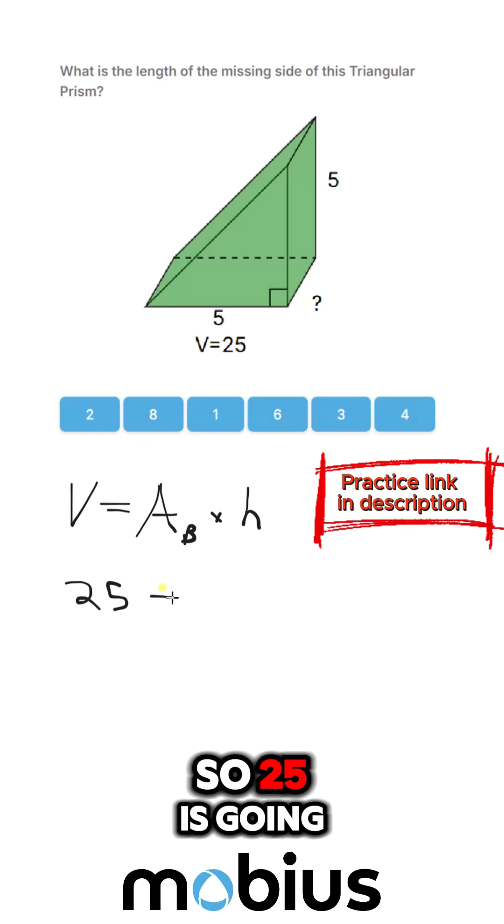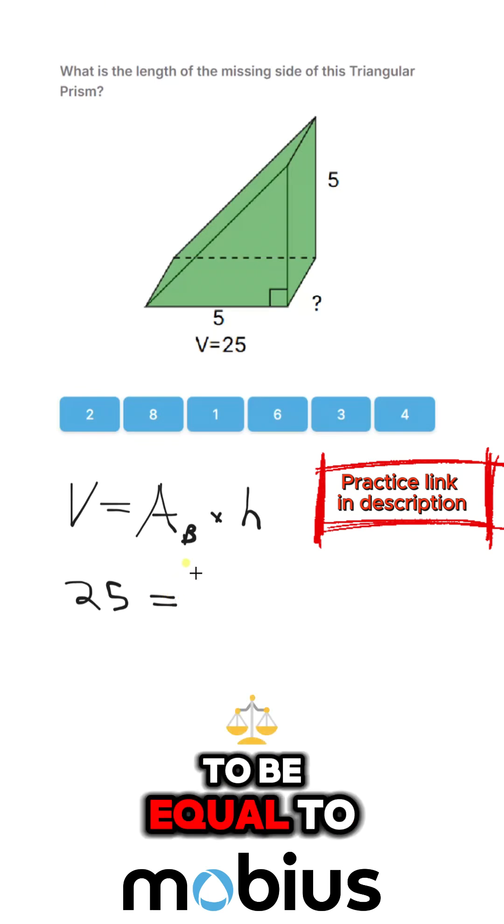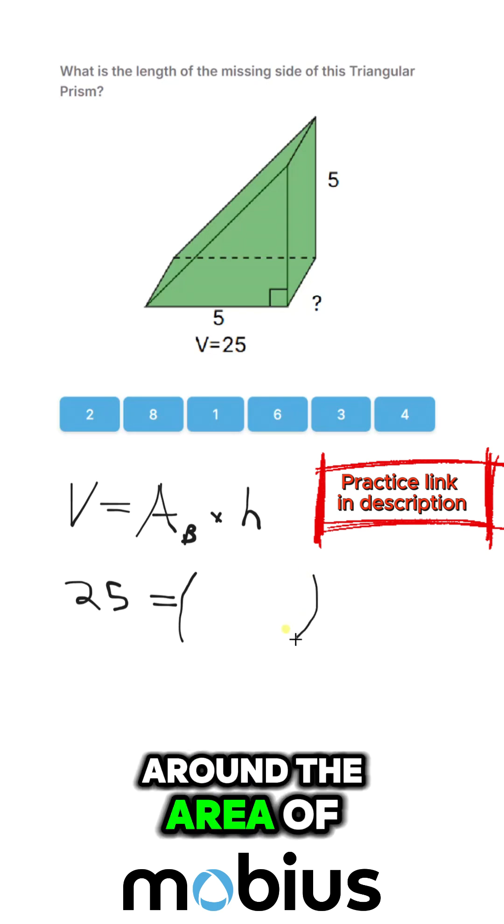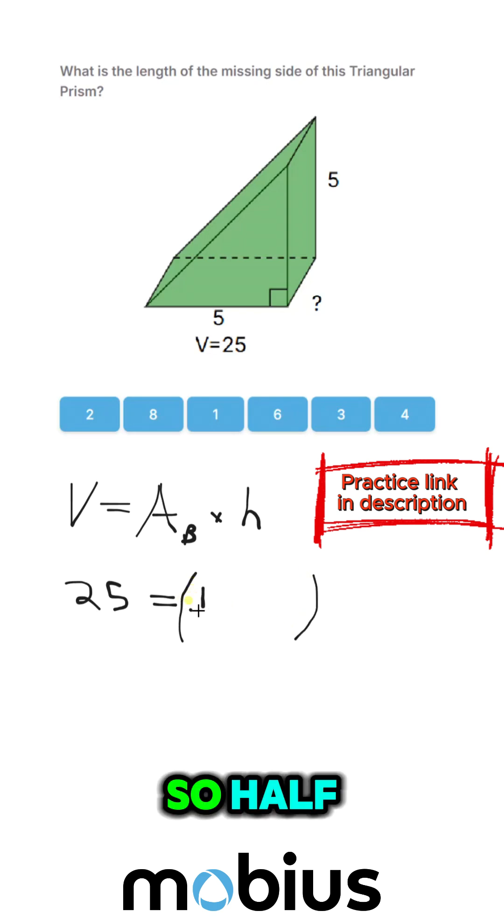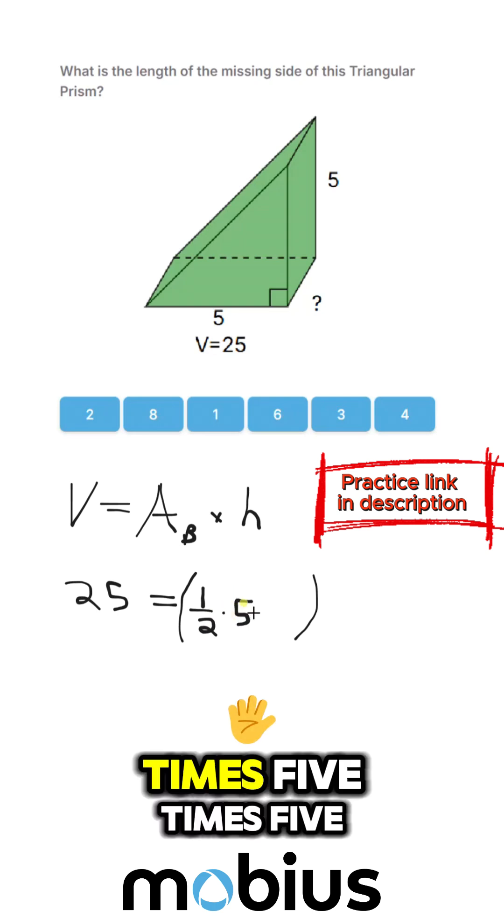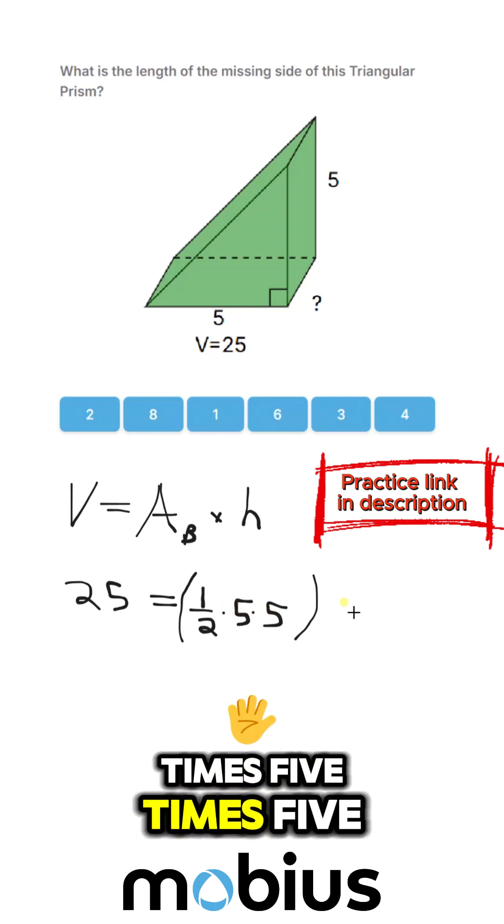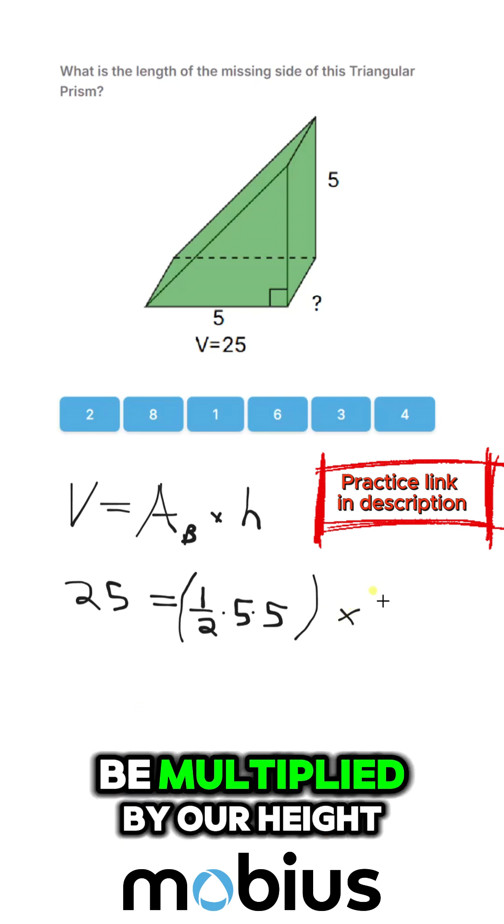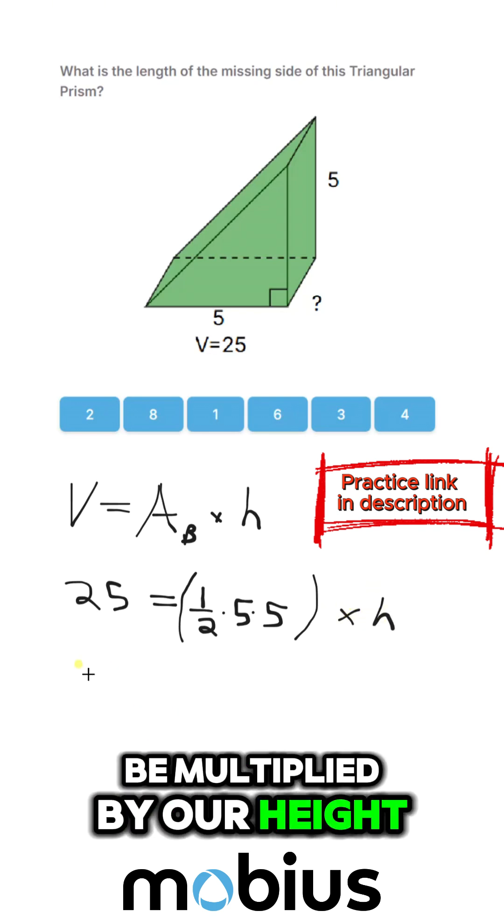So 25 is going to be equal to, I'll put a bracket around the area of our triangle, so half times 5 times 5, and that's going to all be multiplied by our height.